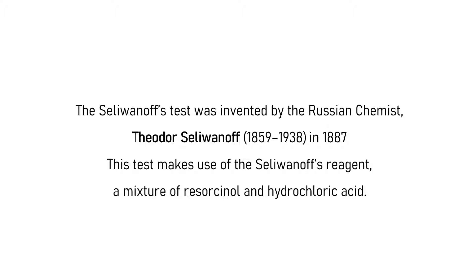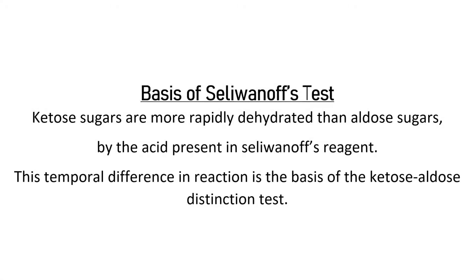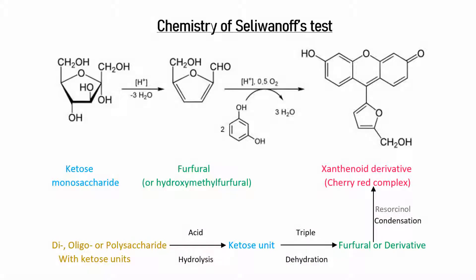The Seliwanoff's test is based on the principle that ketose sugars are dehydrated more rapidly than aldose sugars by the acid present in the Seliwanoff's reagent. Therefore, just like the Barfoed's test, the Seliwanoff's test also exploits the difference in reaction time as the major factor to distinguish between ketoses and aldoses. In the case of ketose monosaccharides present in a sample, they directly undergo triple dehydration to yield the 5-carbon furfural or its derivative.